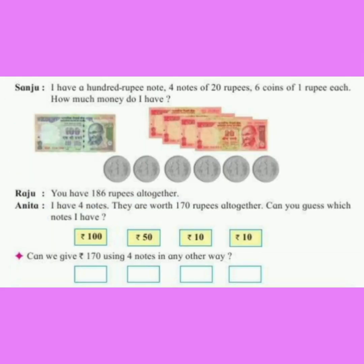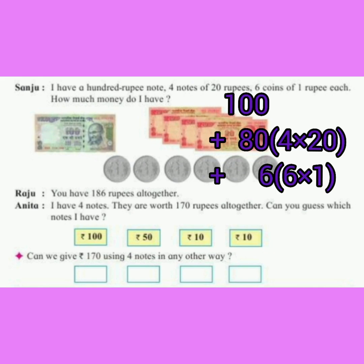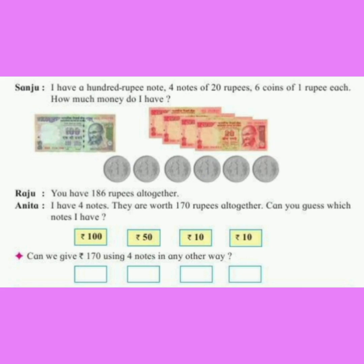Let's see what Sanju and Raju have to say. Sanju says: I have a 100 rupee note, 4 notes of 20 rupees, and 6 coins of 1 rupee each. How much money do I have? That is 100 plus 4 into 20, which equals 80, plus 6 into 1, which equals 6. Raju replies: You have 186 rupees altogether.